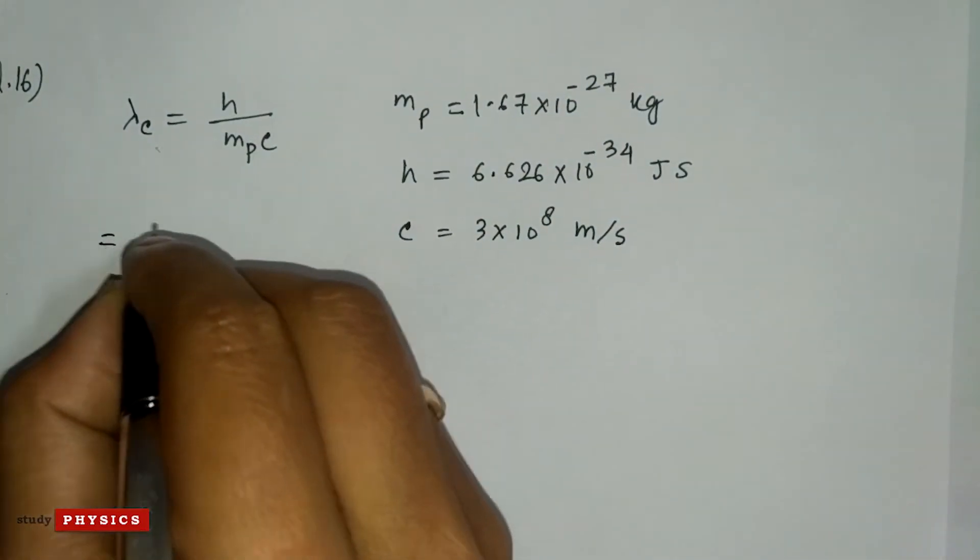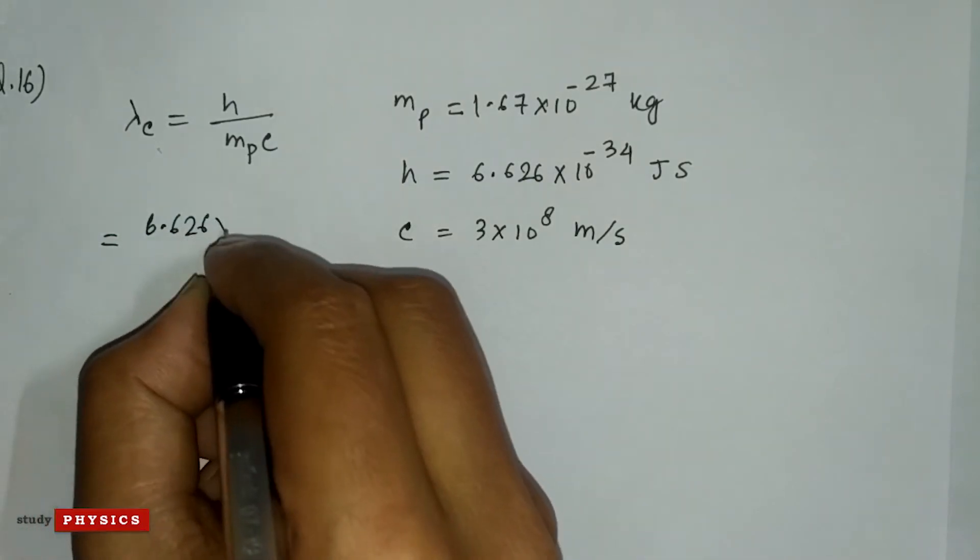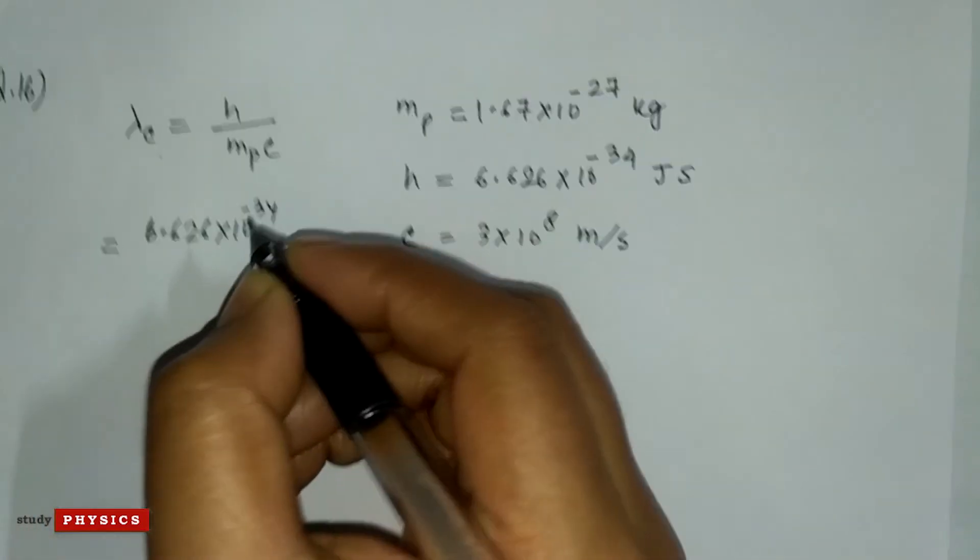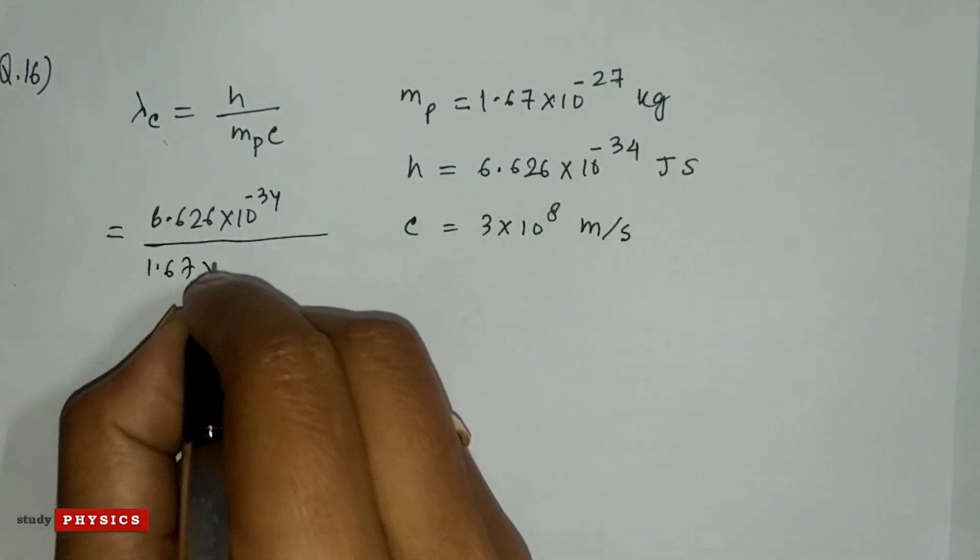Just put these values: h is 6.626 into 10 to the power minus 34, divided by 1.67 into 10 to the power minus 27, into 3 into 10 to the power 8.